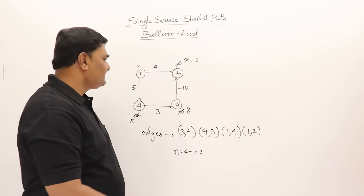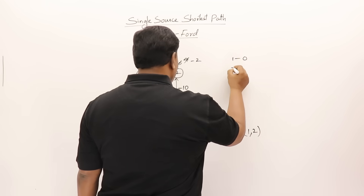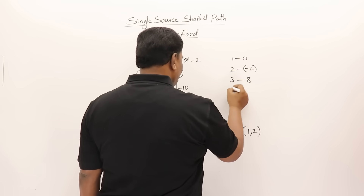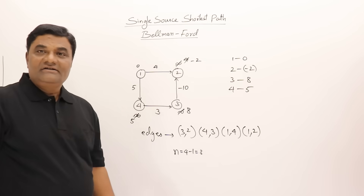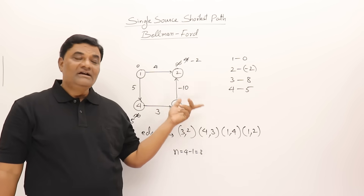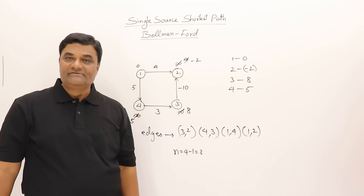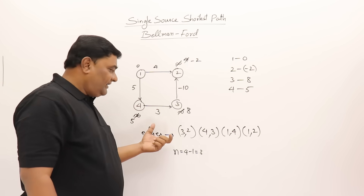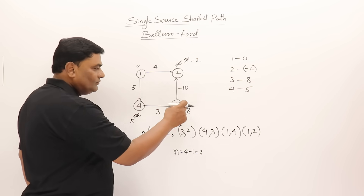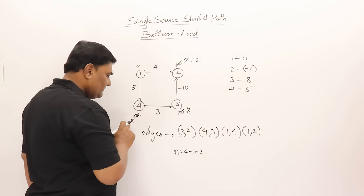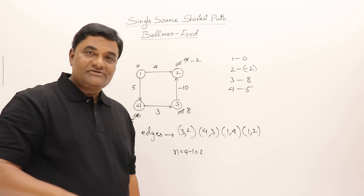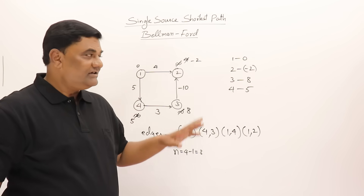The shortest paths from vertex 1 are: vertex 1=0, vertex 2=minus 2, vertex 3=8, vertex 4=5. Bellman-Ford correctly found the answer even with negative edges. If we relax one more extra time: (3,2) gives eight minus ten = minus two — same. (4,3) gives eight — same. (1,4) and (1,2) are same. No changes at all, confirming the answers are correct.